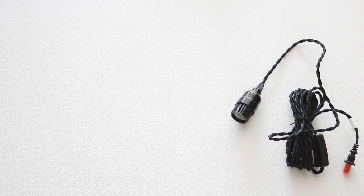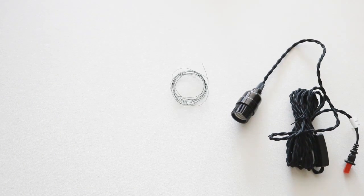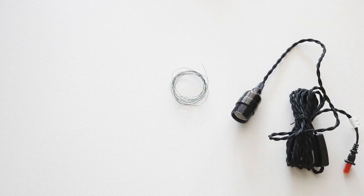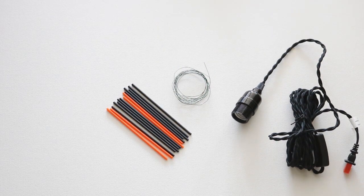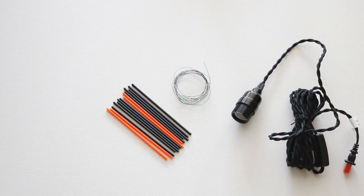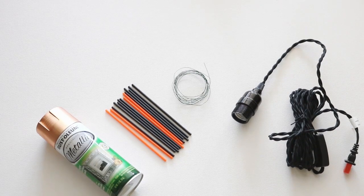To make your geometrical pendant light you will need a light cord, some floral wire, some lollipop sticks (it doesn't matter what color they are as long as they're hollow), some copper spray paint, and some sort of wire cutters.